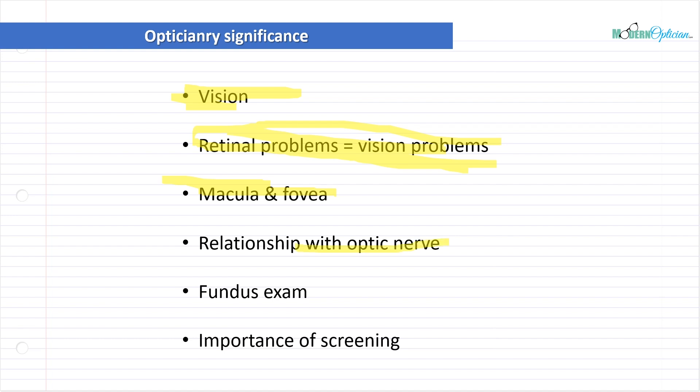We also talked about the relationship between the retina and the optic nerve — you can't have one without the other. Whenever retinal health is being examined, the optic nerve is being examined at the same time. Even though they're two separate structures, they are married — they cannot work independently and absolutely need each other to provide us with vision. These two structures are permanently together.